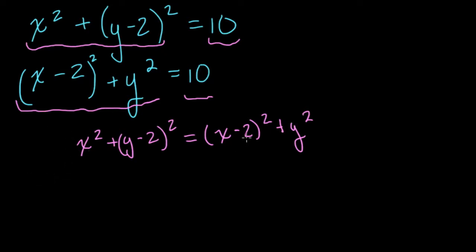By setting them equal to each other, we can find those points. And this actually saves us a lot of time. So now we have to expand (y-2) squared and (x-2) squared.